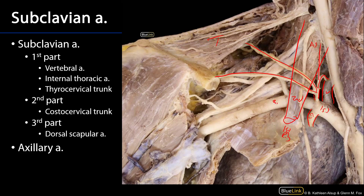The third part of the subclavian artery runs from the lateral border of the anterior scalene out to the lateral border of the first rib, and there's typically one branch from this called the dorsal scapular artery. We can see the dorsal scapular artery moving between the middle and superior trunks of the brachial plexus. It can occasionally be a branch from the transverse cervical artery, but is typically a branch of the third part of the subclavian artery. This dorsal scapular artery serves muscles that attach to the medial border of the scapula — levator scapulae, rhomboid major, and rhomboid minor — with blood.